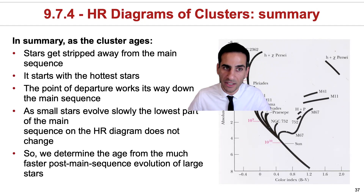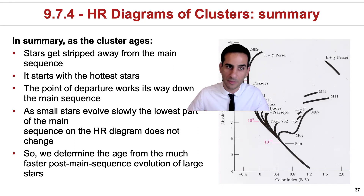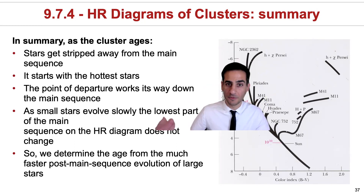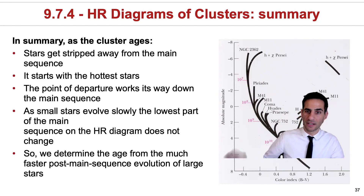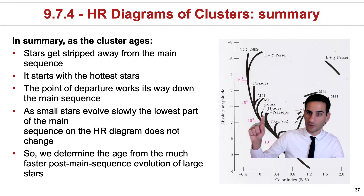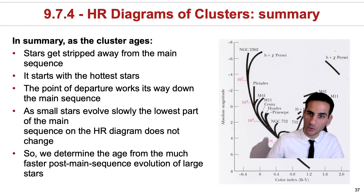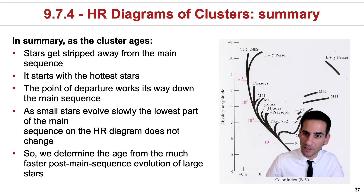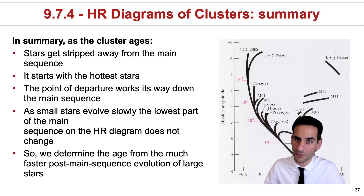It will start with the hottest stars — they will be the first to disappear from the HR diagram or to evolve away from the main sequence. This point of departure will work its way down as stars evolve away from the main sequence, and it's one of the crucial tools that we have in astrophysics to determine the age of a cluster.